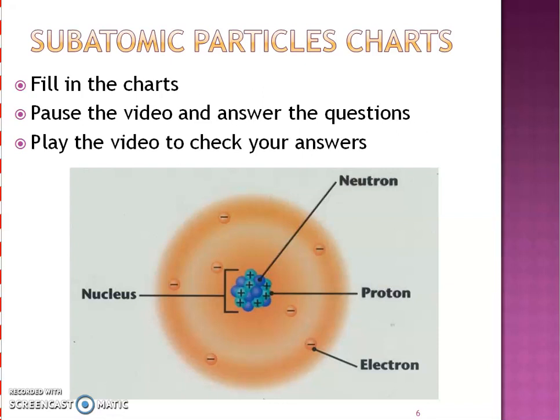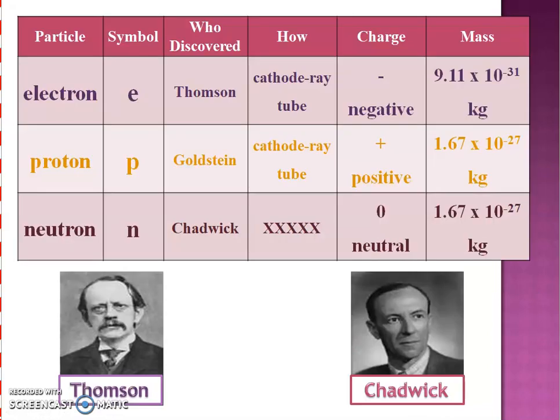So here are the subatomic particles, and there are two charts in your notes to fill out. I have the information here in the video. So you're going to fill out those two charts, then you're going to pause the video because there's a few questions that go along with those charts. Answer as many as you can, and then play the video to check your answers. So before we begin, this is our atom. This is going to be called that electron cloud, and if you see that the rings are slightly different colors, we're going to call those rings energy levels.